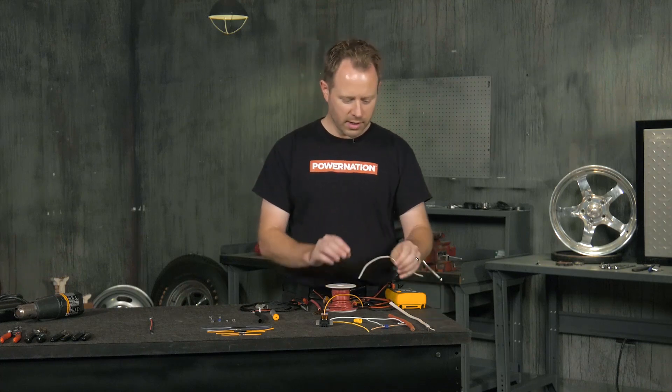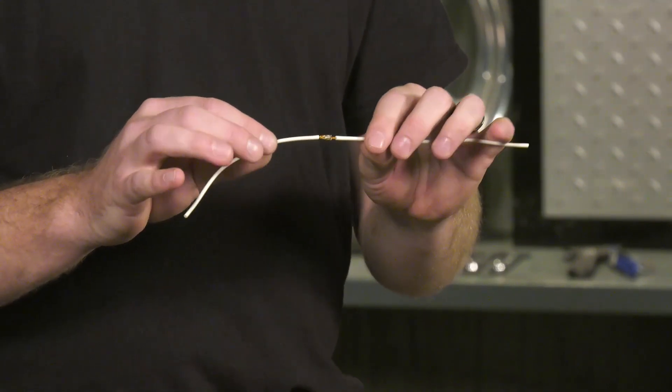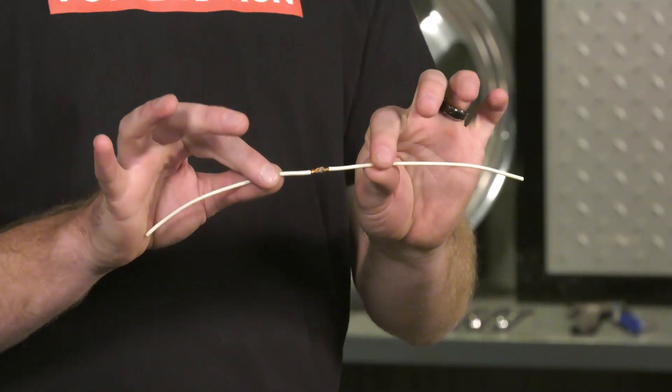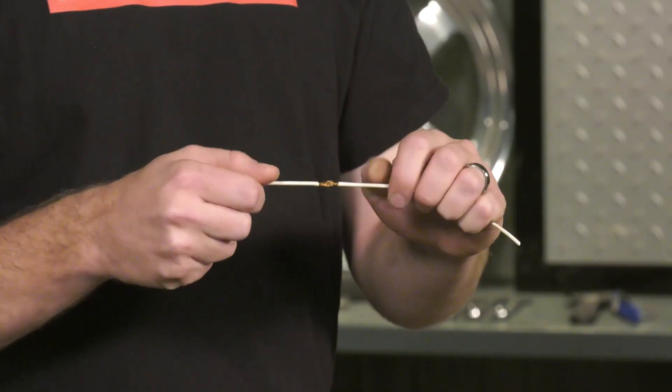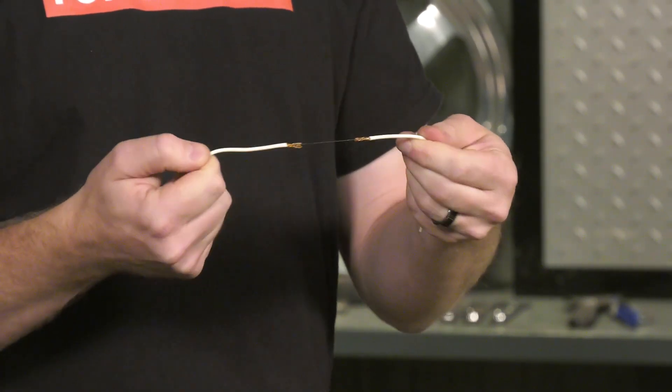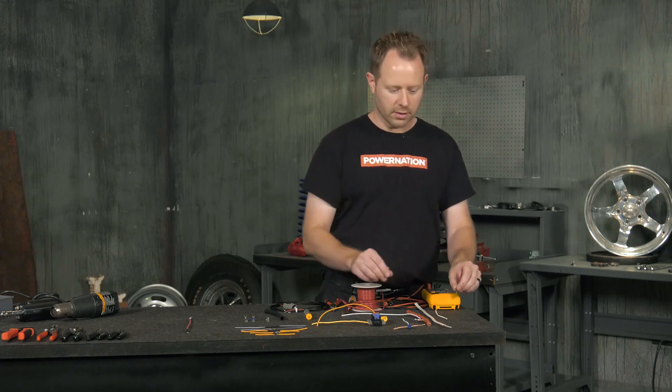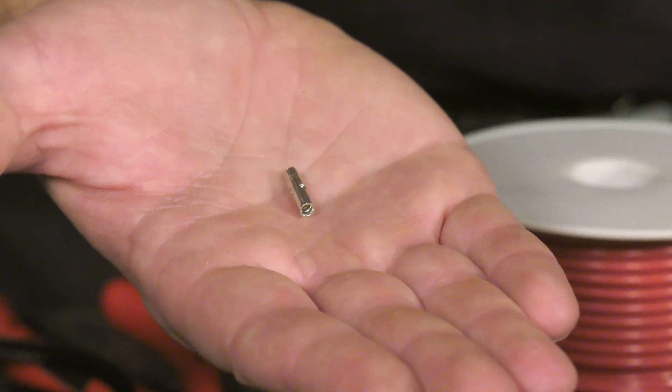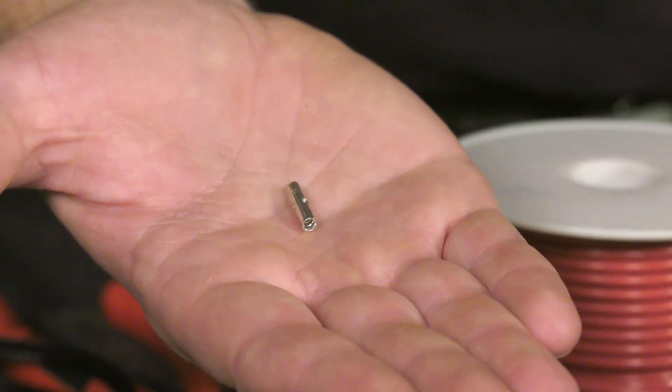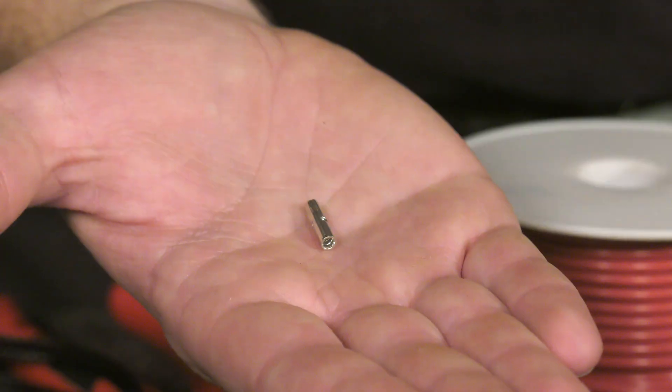So this first one here is an incomplete soldering job. Maybe they had problems heating the wire up, melting. It's barely attached, so it would show continuity, but as soon as you throw some current to it, it's not going to withstand. And if I give it a nice tug, you can see it just separates.